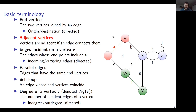We call two vertices adjacent if an edge connects them. So U and V are adjacent, W and Y are also adjacent, but U and X are not adjacent because there is no edge between them. Edges incident on vertex V are the edges that have V as one of the endpoints — in this case edges A, D, and B. In a directed graph, we call these incoming or outgoing edges depending on whether they have V as origin or destination.